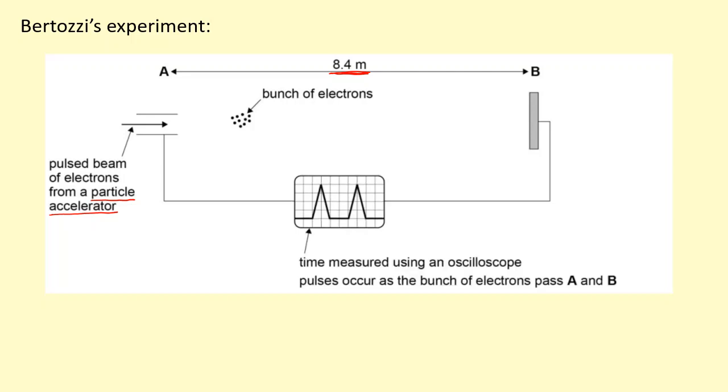...using this oscilloscope. The time will be the difference between these two peaks as it goes past A and B. You can find the speed by simply doing the distance, which is 8.4, divided by the time between those two pulses.